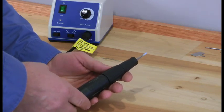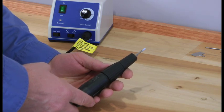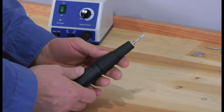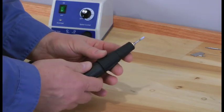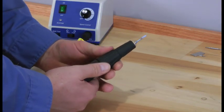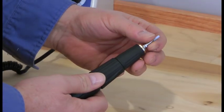I'd like to go over changing burrs and collets right now on our 1070 micromotor. To change a burr, as you can see this has got a 1/8 inch collet inside right now. What you do is you flip the handle here with the two little wings to R for release.